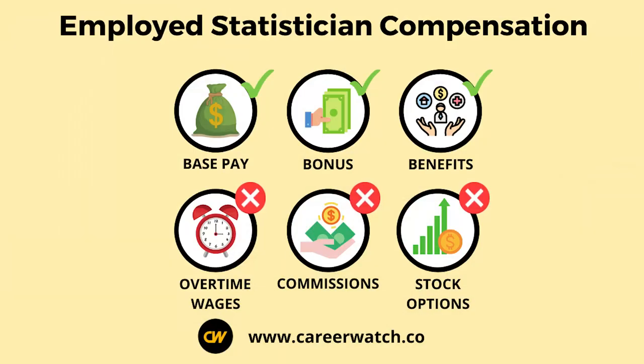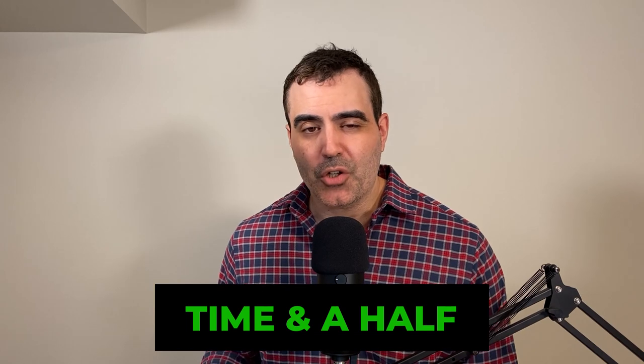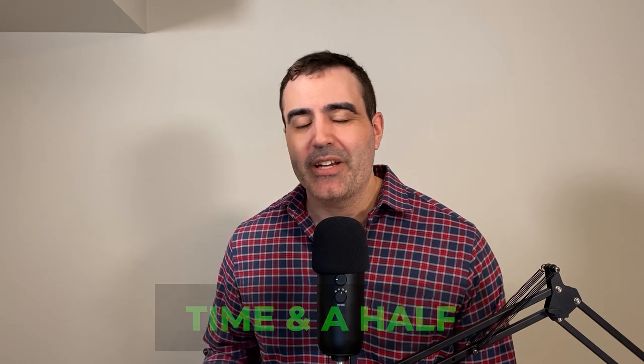But for people that do become statisticians, they can do pretty well. Statisticians typically have three different forms of compensation: most receive a base wage, a bonus every year, healthcare, sick leave, and other benefits. However, because this is considered a professional occupation, statisticians often aren't receiving overtime wages, commissions, or stock options. Unlike a registered nurse, plumber, or electrician — who can earn time and a half above 40 hours a week — statisticians are most likely salaried and might end up working unpaid overtime in certain organizations.